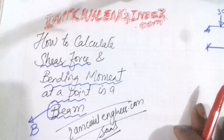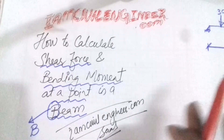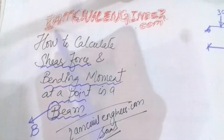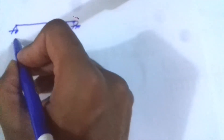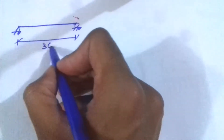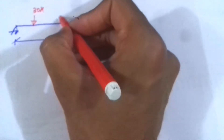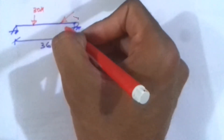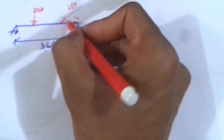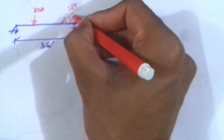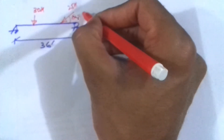In this video we will be going to solve the shear force and bending moment in a beam. So let's start the video. I have a simply supported beam which is having a span of 36 feet and it is applied by two vertical loads. One is 30 kip acting here and the other one is an inclined force of 25 kip, for which the angle is 36.87 degrees.